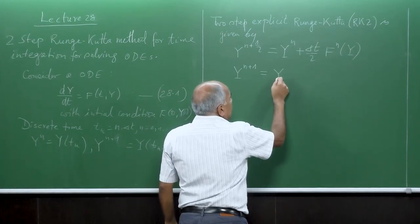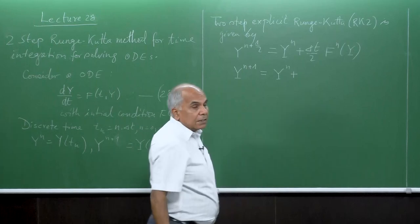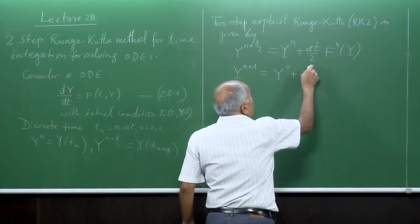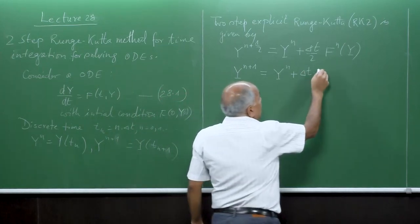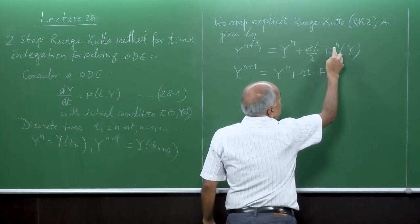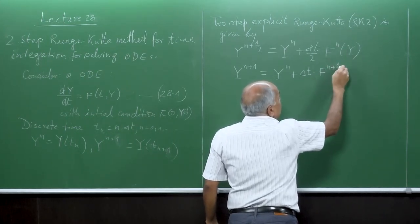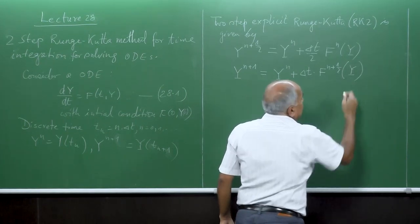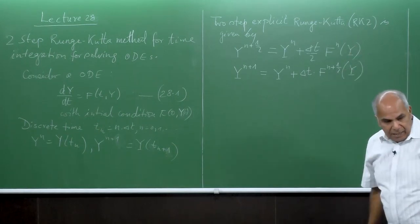Then, finally, we obtain y_{n+1}. It is again y_n, but instead of taking delta_t/2, I use the full time step delta_t. And I compute the right-hand-side vector not at time level n, but at time level n+1.